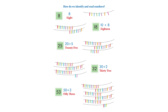Now let's try eighteen. The first rope has ten clips — count them: one through ten. The second rope has eight clips. So ten plus eight equals eighteen. Twenty-five is twenty plus five. Thirty-two is thirty plus two. Fifty-three is fifty plus three.